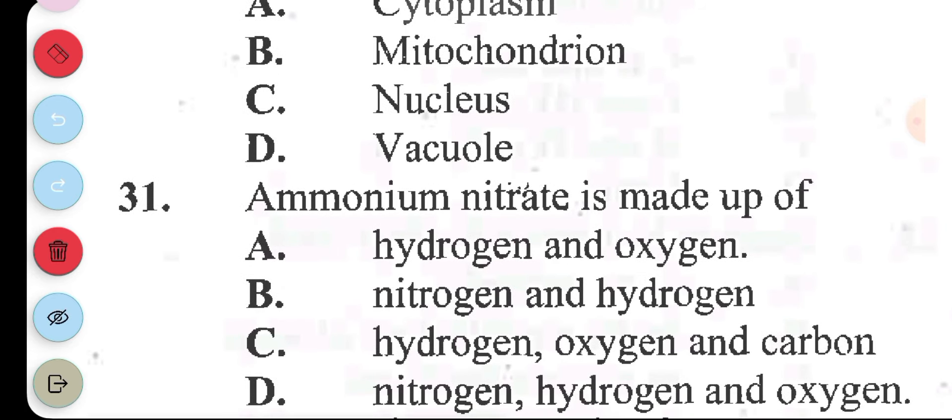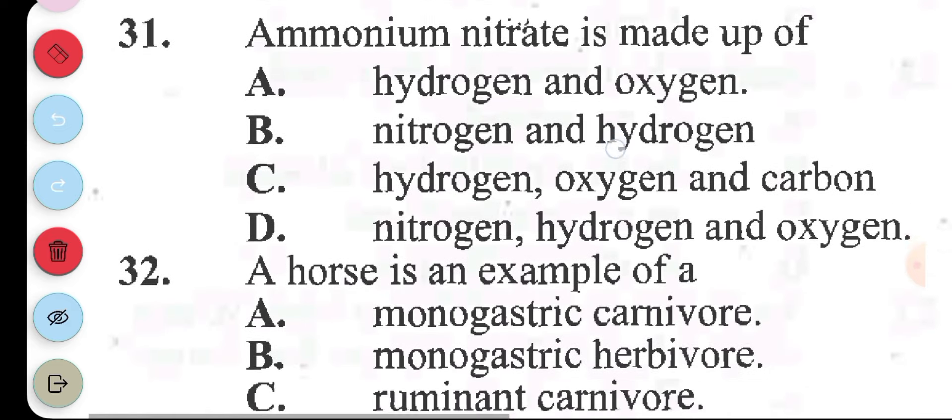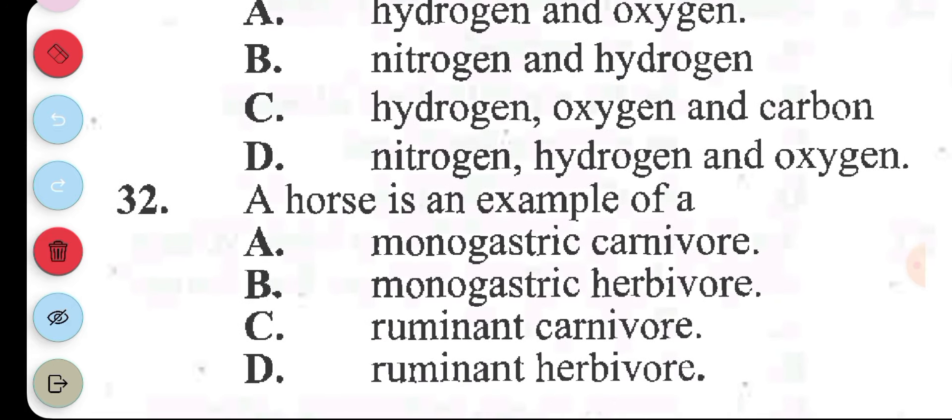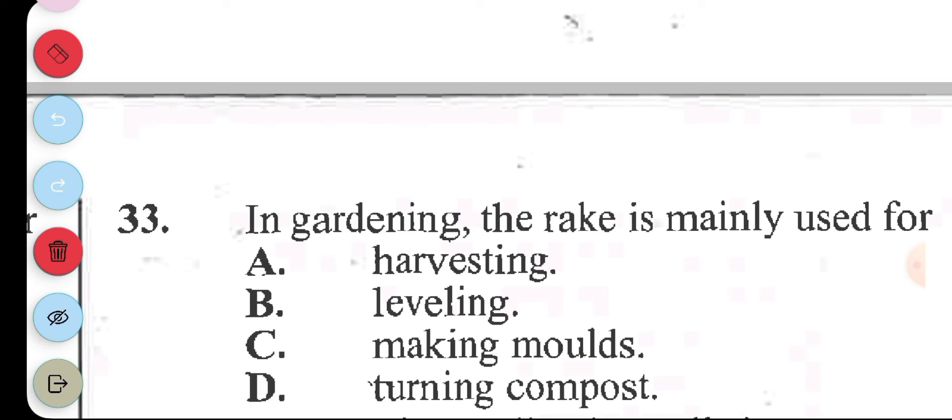Question 31: ammonium nitrate is made up of A, hydrogen and oxygen. B, nitrogen and hydrogen. C, hydrogen, oxygen, and carbon. D, nitrogen, hydrogen, and oxygen. So ammonium nitrate, you have nitrogen in there, you have hydrogen in there, you also have oxygen in there. The answer to question 31 is D. Question 32: a horse is an example of A, monogastric carnivore, no, B, monogastric herbivore. Question 33: in gardening, the rake is mainly useful A, harvesting. B, leveling. C, making molds. D, turning compost. The answer is B, leveling, leveling the ground.